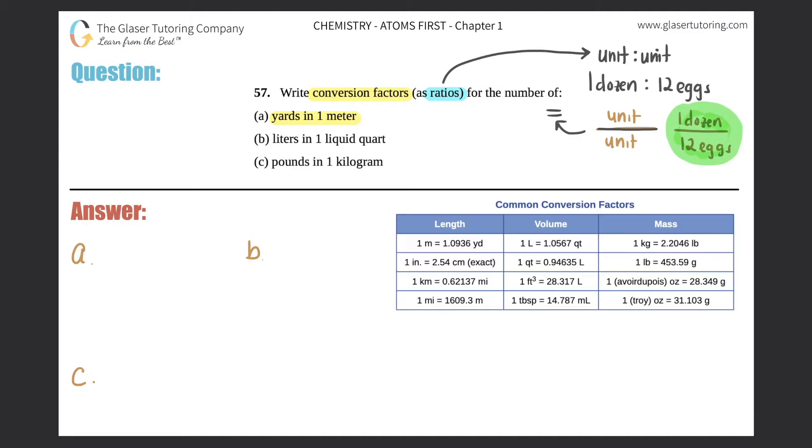So now we just have to find out that ratio, the two units that will equal each other. And they want for (a) yards in one meter. Now for ratios, you have to be super specific because the way that they say them is how they want it written. Do you see how they say yards first and then comes one meter?